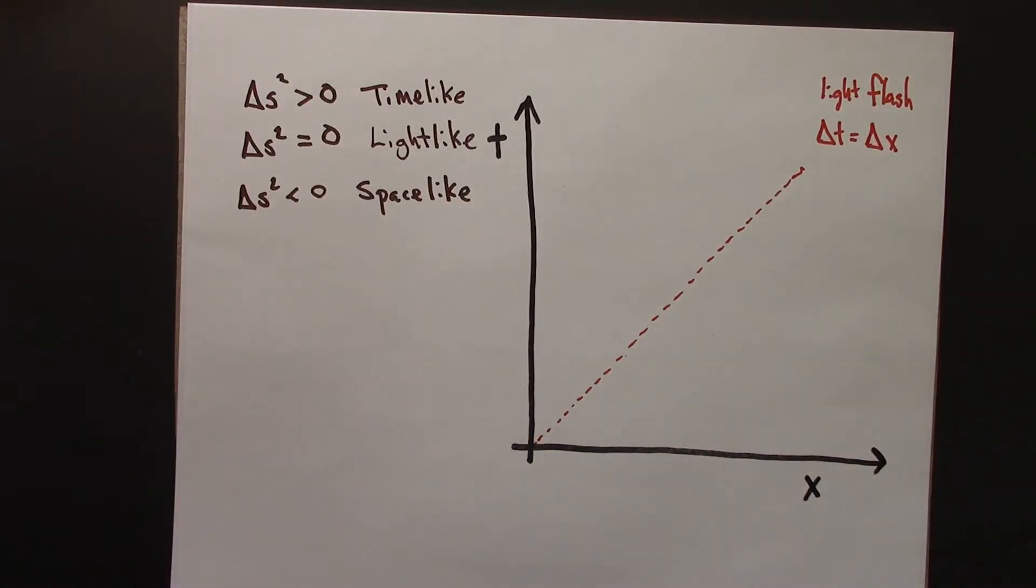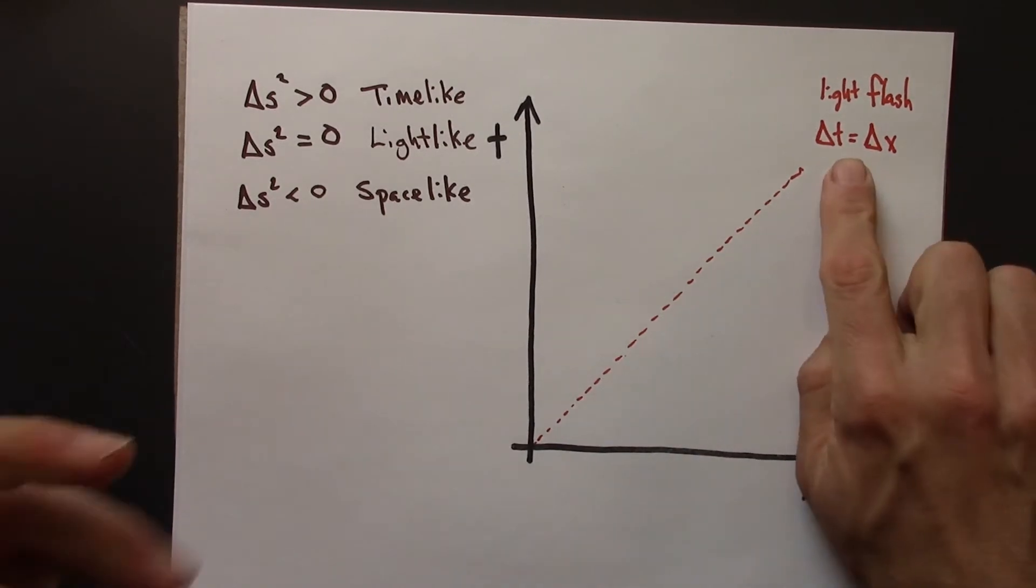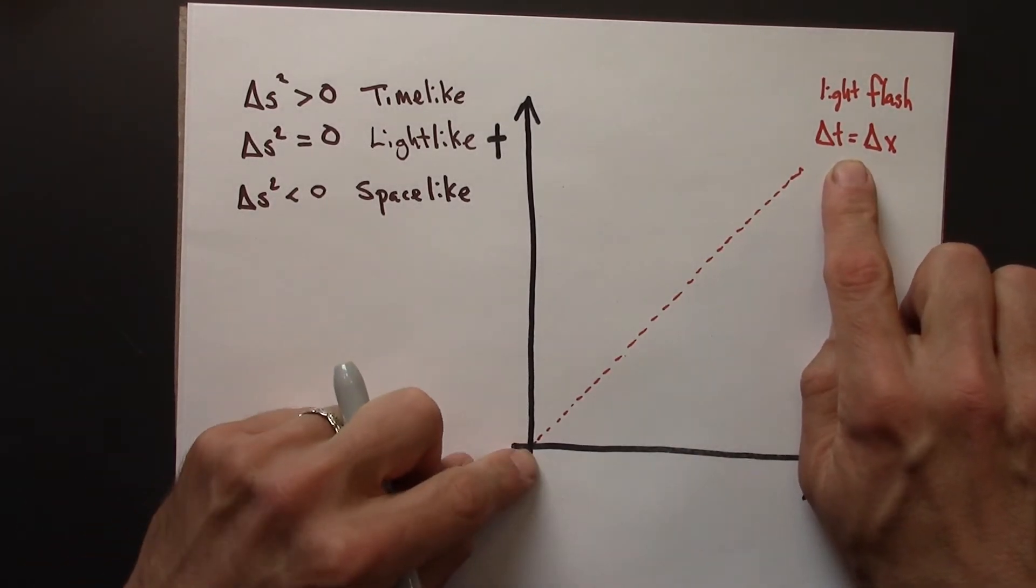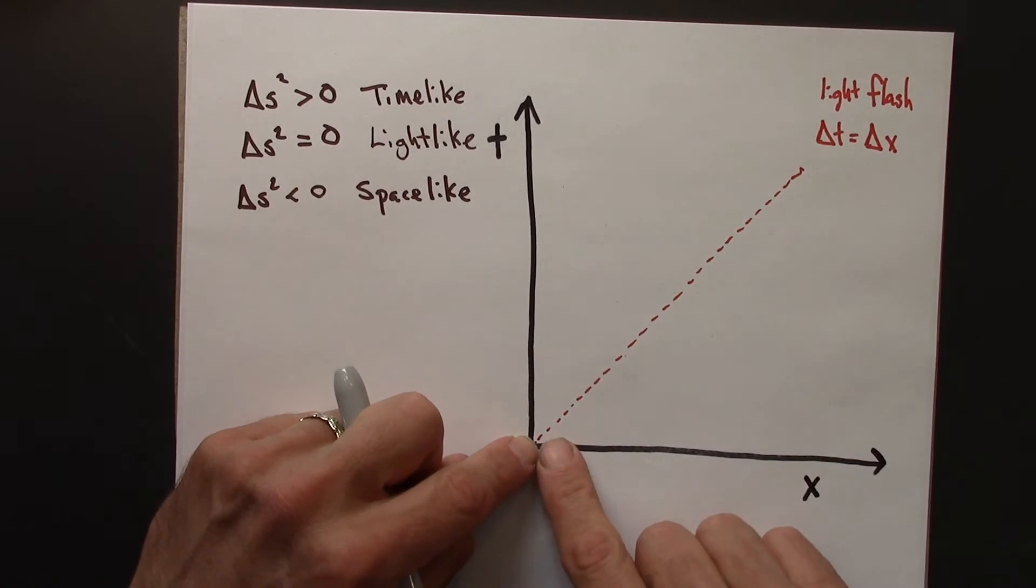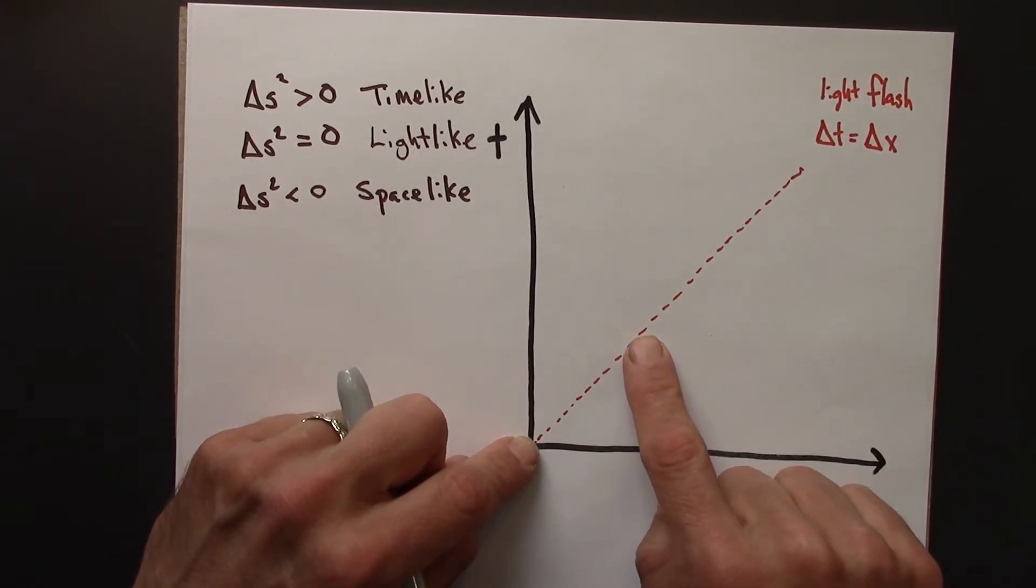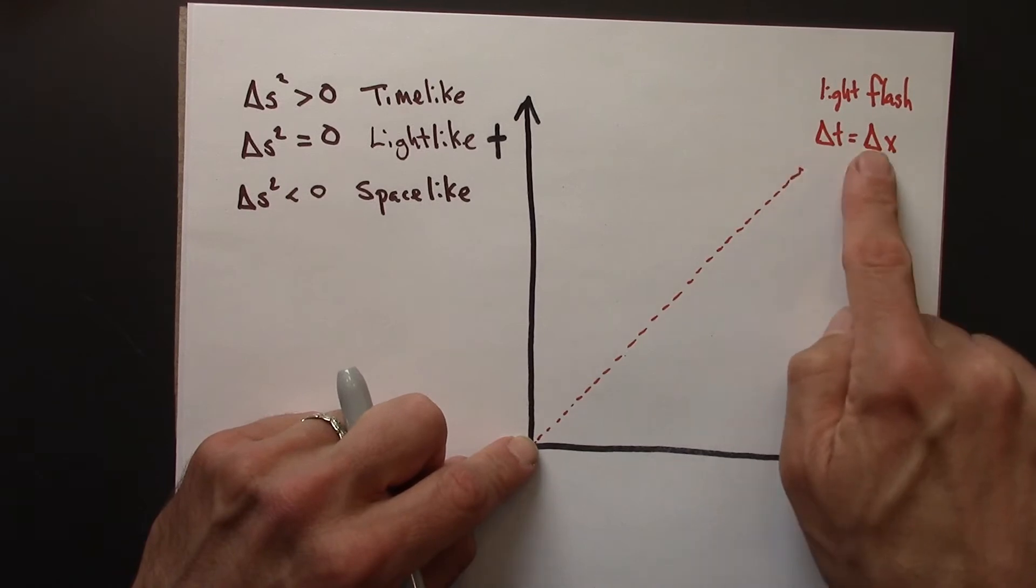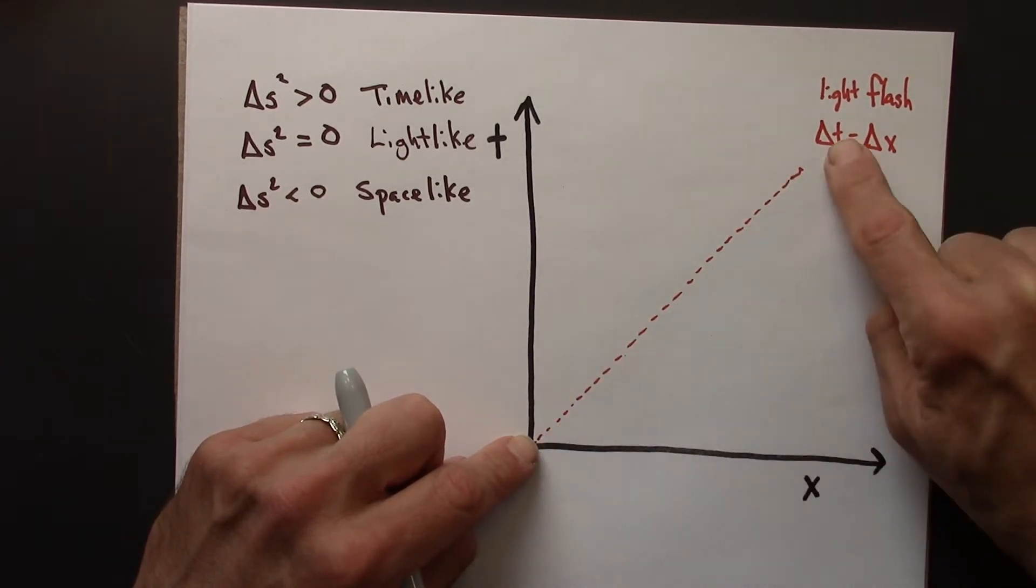And along this line, delta T equals delta X. The reason is that the speed of light is the speed of light. One X unit corresponds to one time unit, and so that would mean that delta X is going to equal delta T along this line.